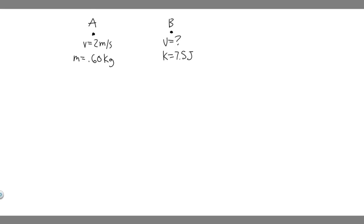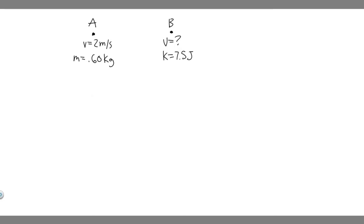I went ahead and drew what's going on. At point A, we know its velocity is 2 m per second, and it has a mass of 0.6. The mass is going to be constant, so the mass here is the same as the mass at point B. And at point B, its kinetic energy is going to be equal to 7.5 joules, though we don't know its velocity.